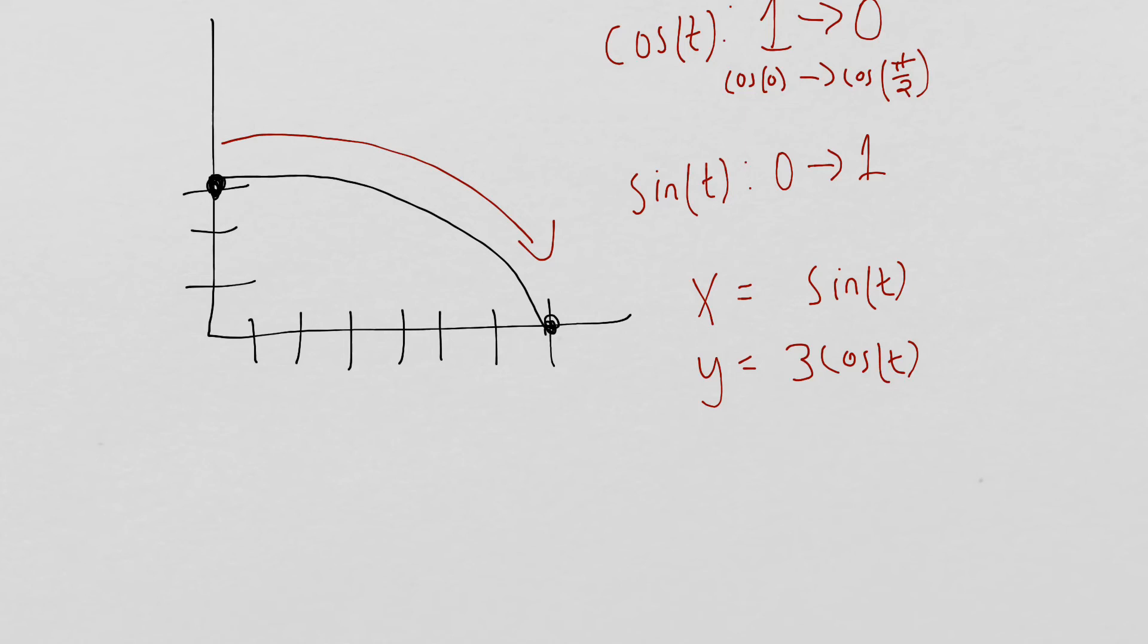And then, again, with sine, normally at π/2, sine would be equal to 1, so our x value would be equal to 1, but it's actually equal to 7, so that's going to throw a 7 out front here. So there's our parameterization. x = 7sin(t), y = 3cos(t).